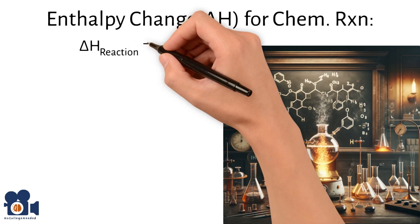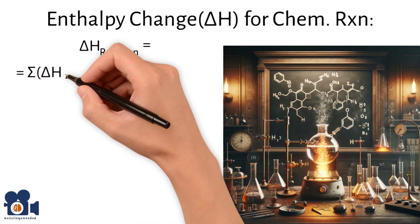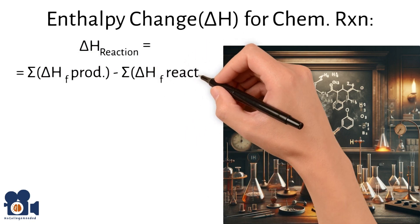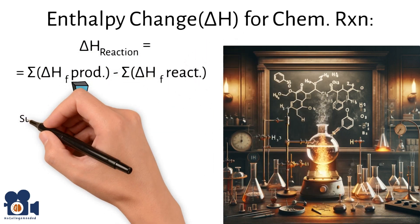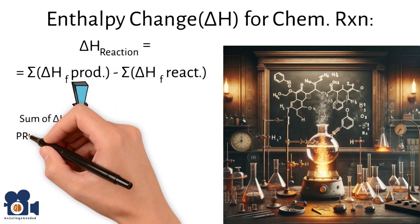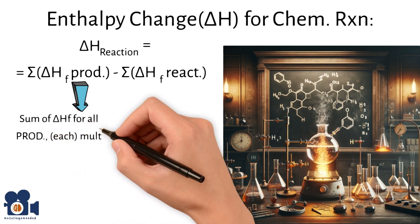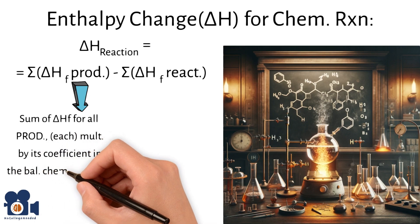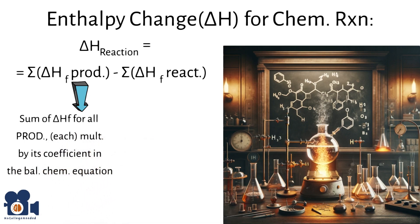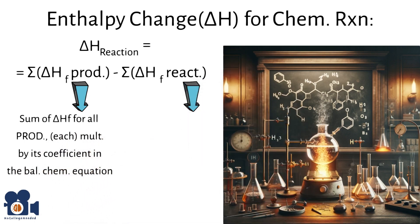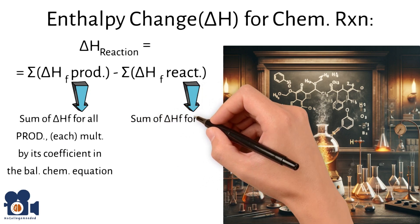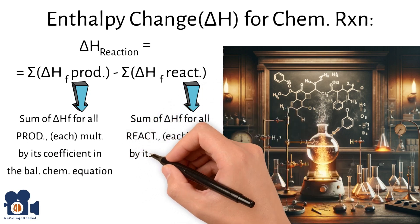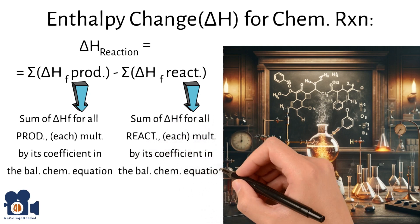The enthalpy change for a chemical reaction can be calculated using the enthalpies of formation and the following equation: delta H reaction equals the sum of delta Hf of the products minus the sum of the delta Hf of the reactants, where the sum of delta Hf of products equals the sum of the standard enthalpies of formation for all the products, each multiplied by its coefficient in the balanced chemical equation. And sum delta Hf of reactants equals the sum of the standard enthalpies of formation for all reactants, each multiplied by its coefficient in the balanced chemical equation as well.